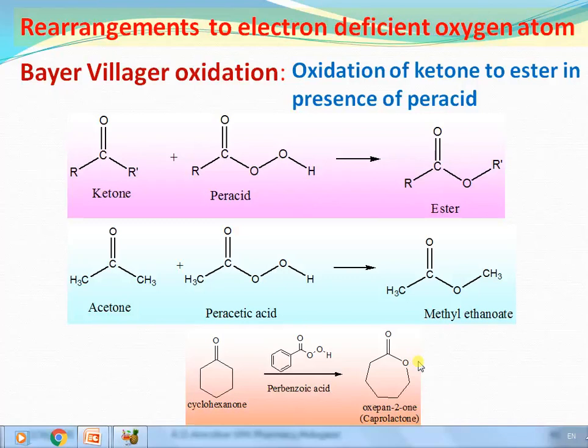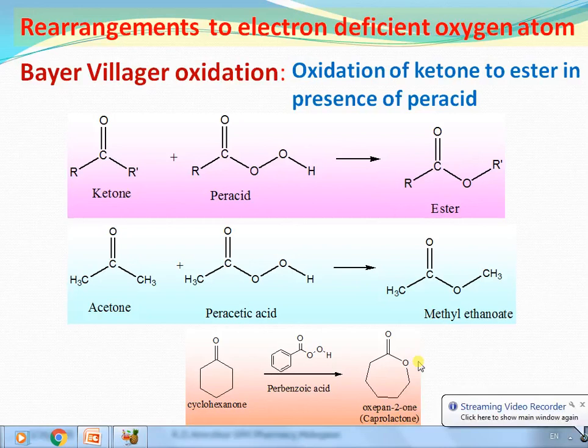Good morning one and all. Today we will discuss the Baeyer-Villiger Oxidation Reaction. It is a rearrangement to an electron-deficient oxygen atom — specifically, the oxidation of a ketone to an ester in the presence of a peracid.